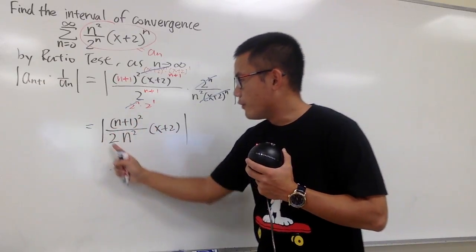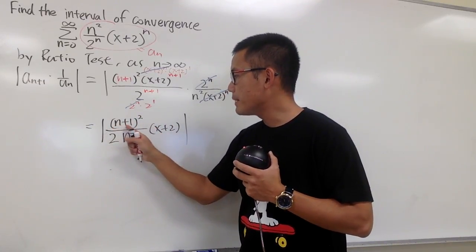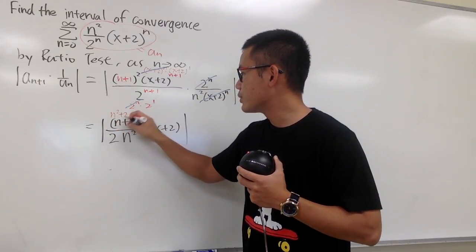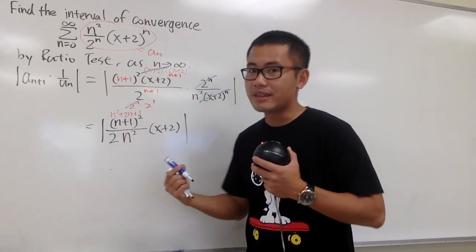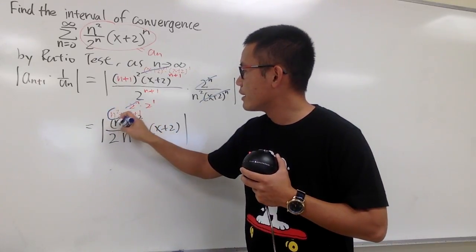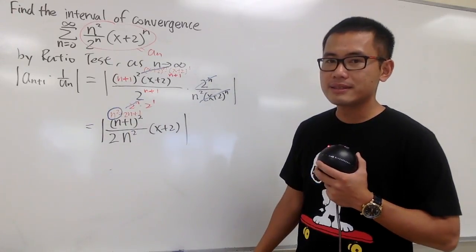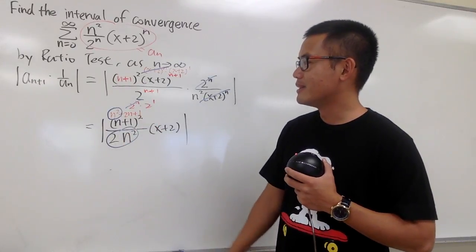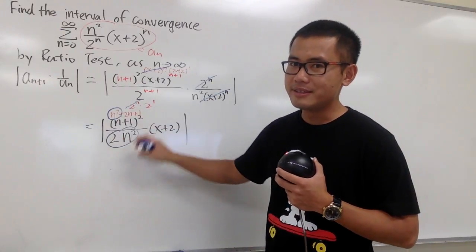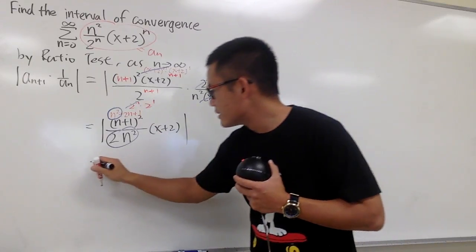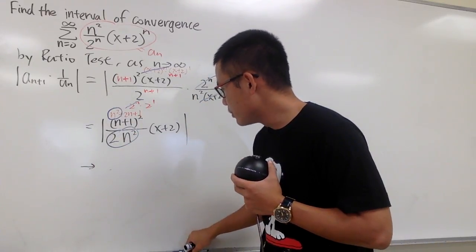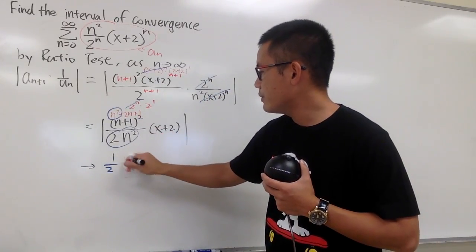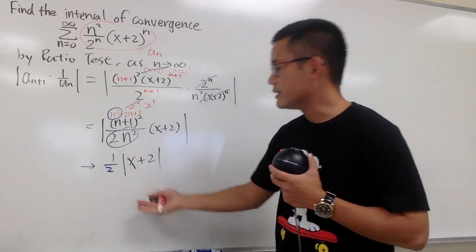So the limit as n goes to infinity: on the top we have (n+1)², which is the same as n²+2n+1, and you look at the dominating part which is n². That's the term with the highest power of n. On the bottom we have 2 times n². Altogether, this is going to be approaching 1/2. All this is going to be approaching 1/2, and we still have the absolute value of (x+2) inside.